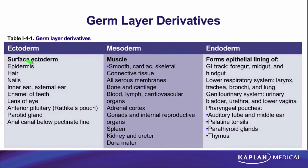Similarly, ectoderm gives us epithelial cells. On the surface ectoderm column it says epidermis — not skin — just the epithelial layer of the skin comes from ectoderm. The underlying dermis, which is connective tissue, comes from mesoderm. So the cell types derived from ectoderm and endoderm are all epithelial or epithelial-derived cells. All the other cell types — cardiac muscle, smooth muscle, skeletal muscle, bone, cartilage — must all be coming from mesoderm, and in fact that is the case.